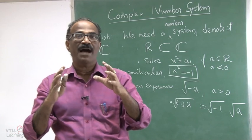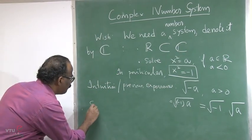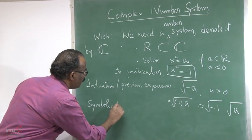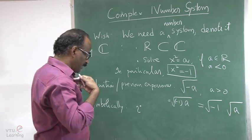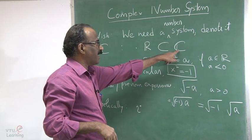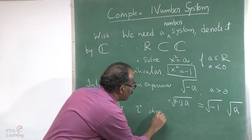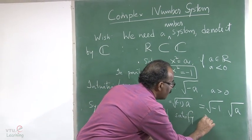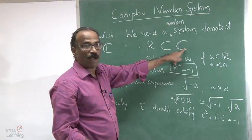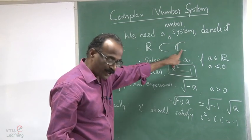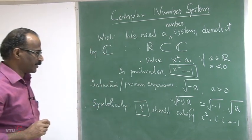We want to introduce some object such that after introducing that object and the algebra of addition, multiplication, division, and subtraction in C, that object solves our problem. Symbolically, we introduce one symbol — call it i — and our intuition is that once we introduce multiplication algebra in C, this i should satisfy i² = i · i = −1.